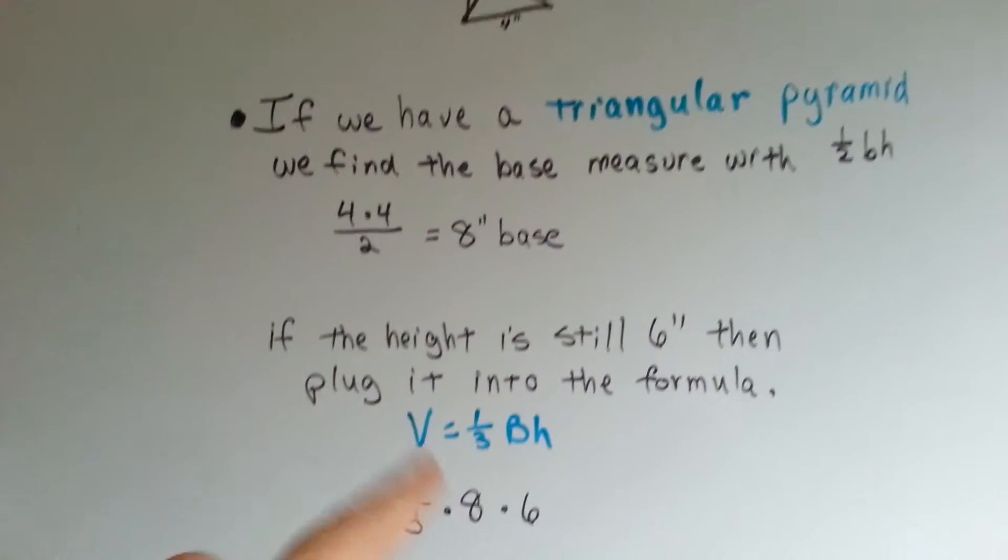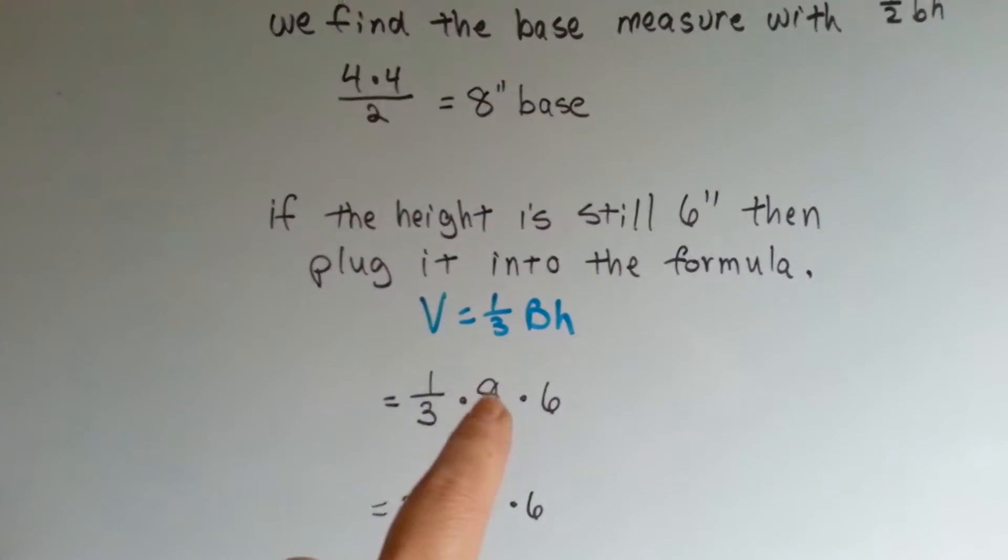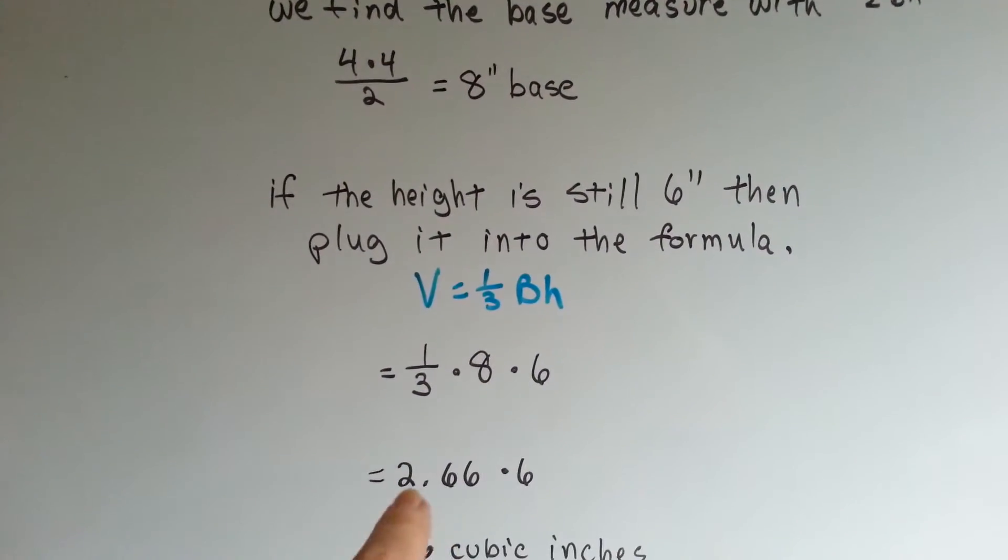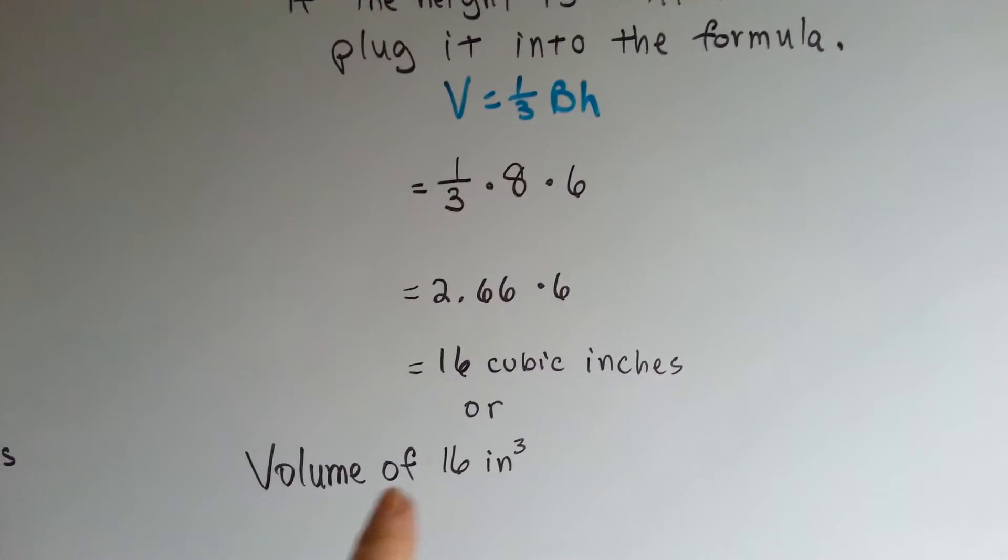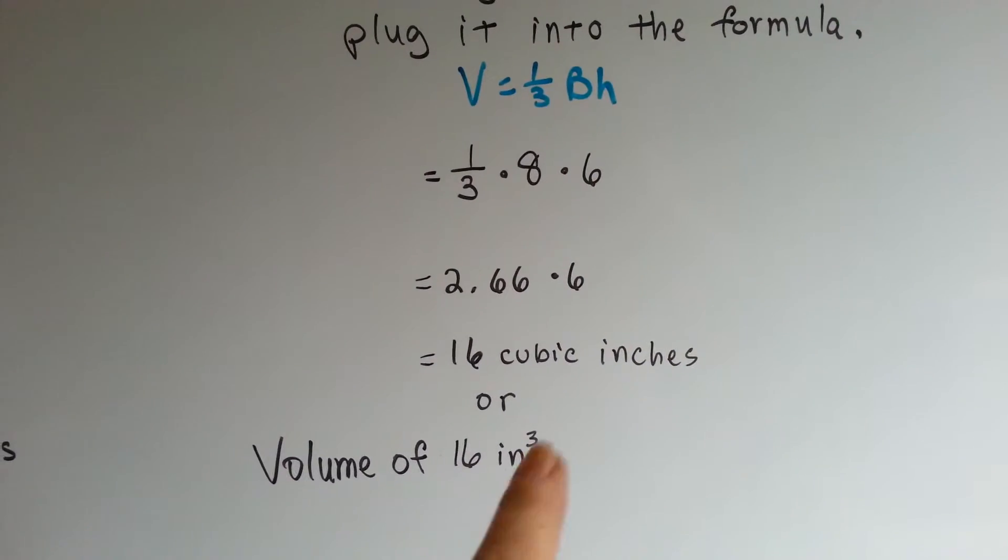If our height is still 6 inches, we plug this into the formula. One-third of the 8 is 2.66. We multiply it by the height of 6, and we get 16 cubic inches, or our volume is 16 inches cubed.